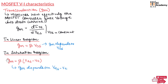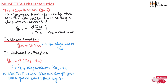The value of GM in the saturation region depends upon VGS minus VT. Hence, we can say the MOSFET acts like an amplifier with gain controlled by VGS in the saturation region.